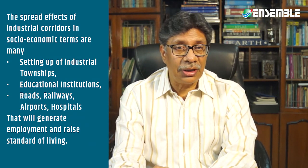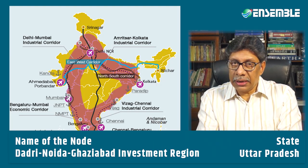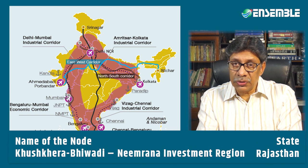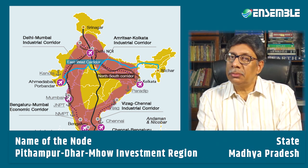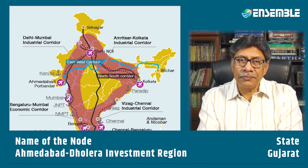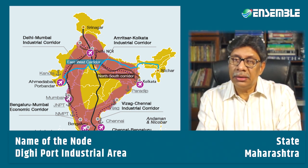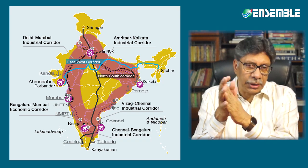The government is developing or planning to develop five industrial corridors in the country. These include the Dadri-Noida-Ghaziabad Investment Region in Uttar Pradesh, Manesar-Bawal Investment Region in Haryana, Khushkhera-Bhiwadi-Neemrana region in Rajasthan, Pithampur-Dhar-Mhow region in Madhya Pradesh, Ahmedabad-Dholera in Gujarat, Shendra-Bidkin Investment Region in Maharashtra, Dighi Port in Maharashtra, and Jodhpur-Pali-Marwar Industrial Region in Rajasthan. The most important of these is the Mumbai Industrial Corridor region.